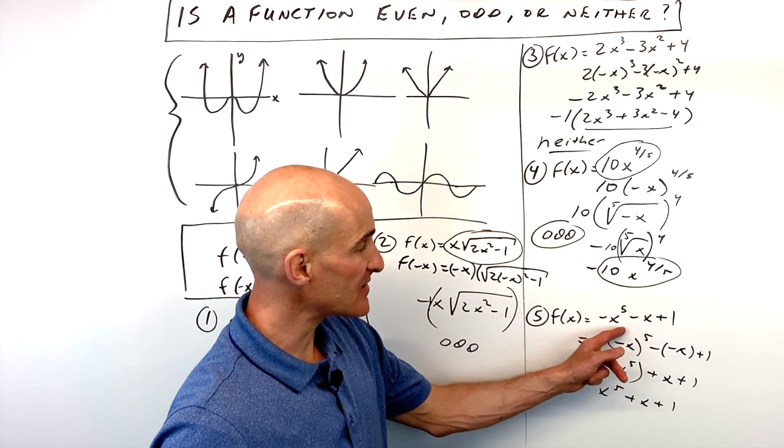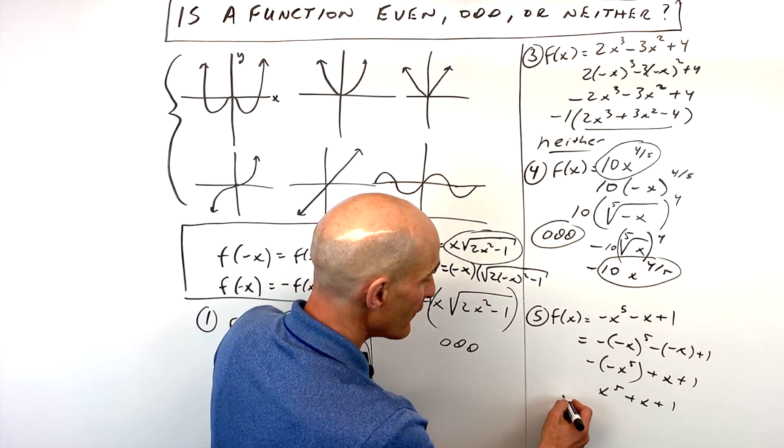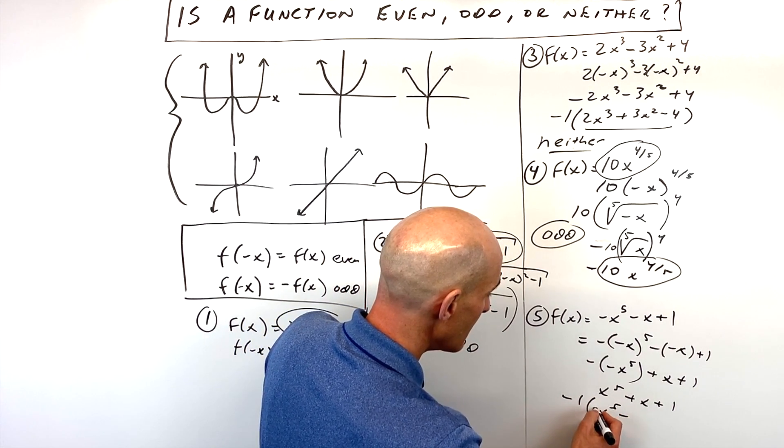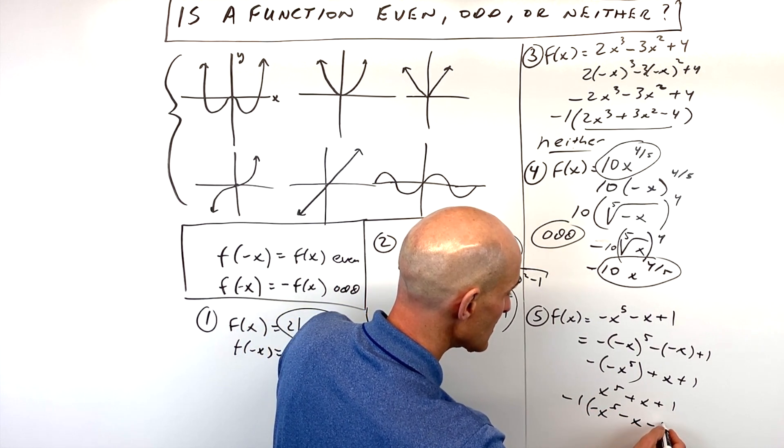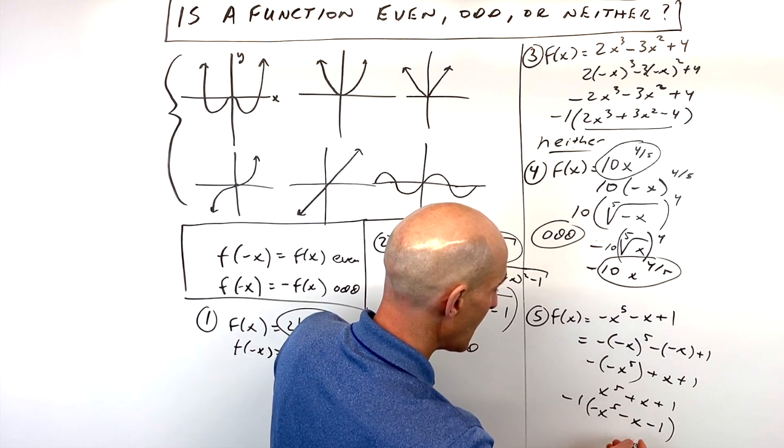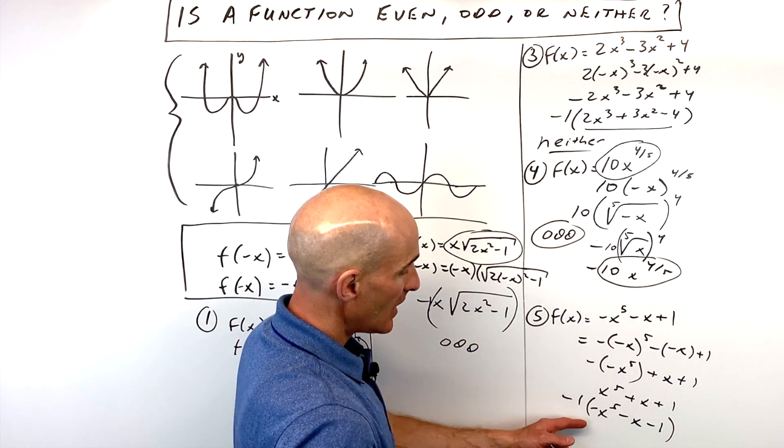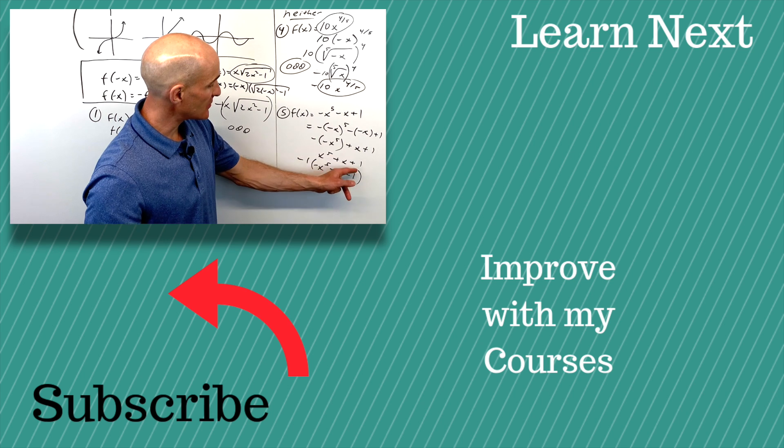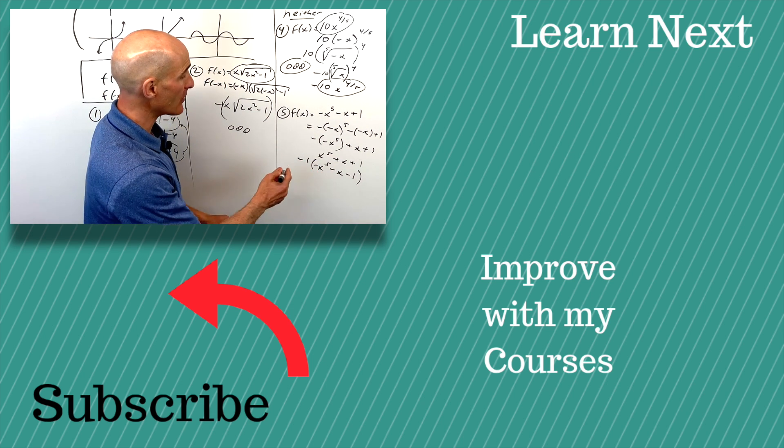And you can see it's not the same as the original function. If we factor out a negative 1, we get negative x to the 5th, negative x minus 1. And does that look like the original function? No, it does not because see positive 1, negative 1. So it's not odd. So this one is neither.